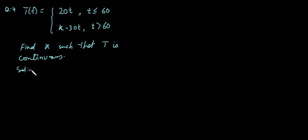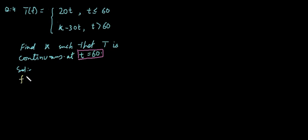We shall find the conditions and then simplify to find the value of k. Since the function is given to be continuous at t equals 60, we start with the first condition: finding the value of the function at t equals 60. When t equals 60, the value comes from the first piece 20t; replacing t by 60 gives 1200.